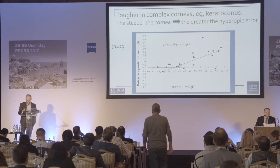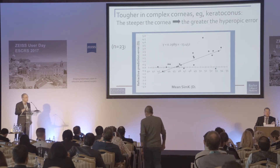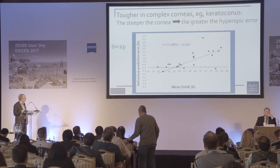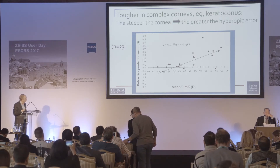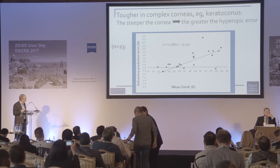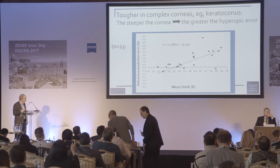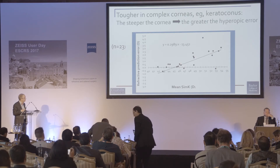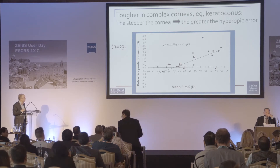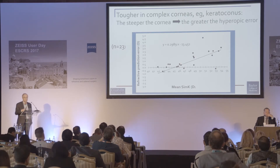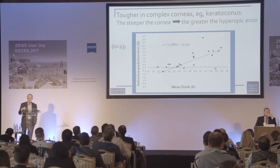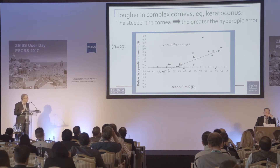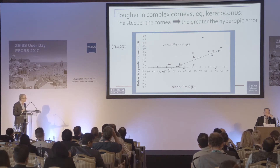When we get into more complex corneas, these are our data in keratoconus eyes. This is the refractive prediction error, and you can see the big spread. There's a lot of variability, a big error, and some of that error clearly is in our corneal measurements. Again, measuring larger zones, more zones, more spots, is going to be helpful.